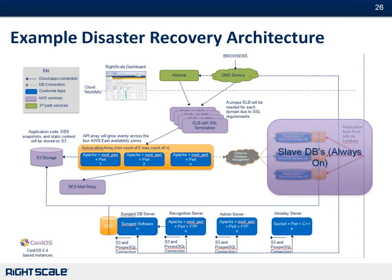There was a question about why not put a slave database in Amazon US West for disaster recovery. That's precisely what we're describing here — having a separate production site and disaster recovery site in different Amazon availability zones or completely different regions if necessary for your SLAs.